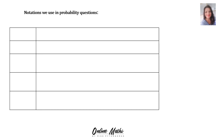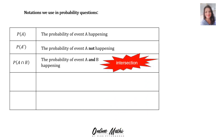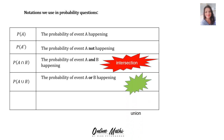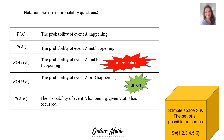The notations we use in probability. P(A) means the probability of event A happening. P(A complement) means the probability of event A not happening. P(A and B) means the probability of event A and B happening, and that symbol means intersection. P(A or B) is the probability of event A or B happening, and that symbol means union. And then lastly, we get the probability of event A happening given that B has occurred.